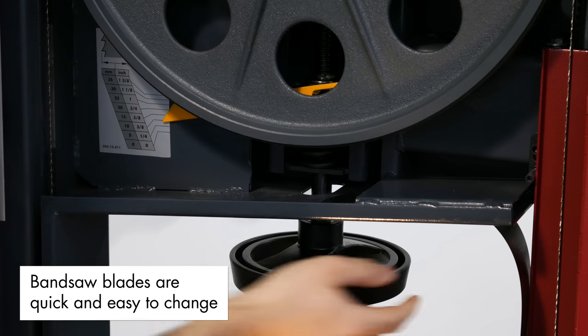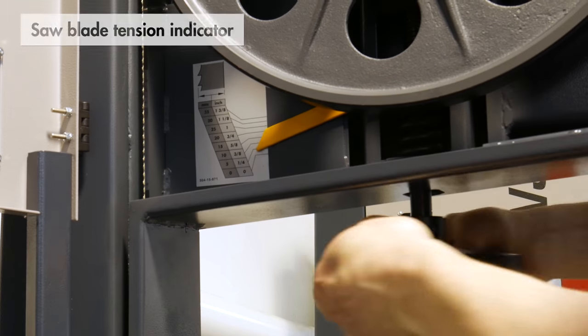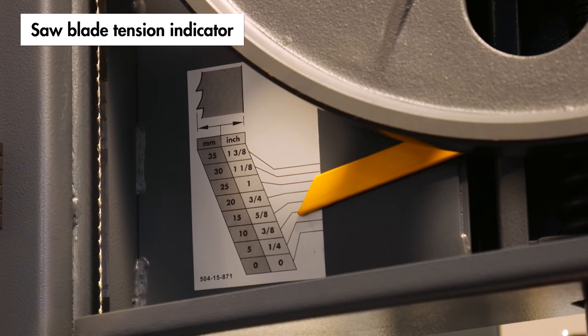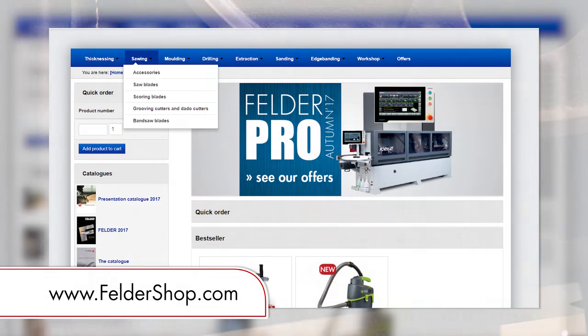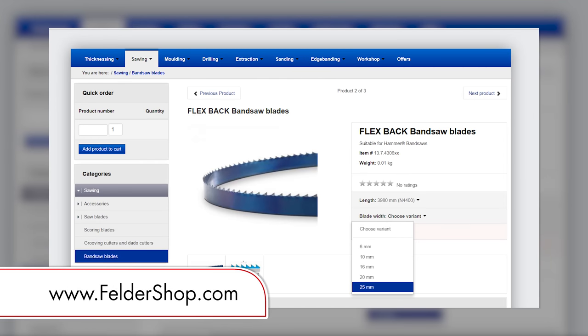Similarly, the bandsaw blade is also easily changed in just a few steps, and the blade tension indicator eliminates the need for guesswork by displaying the correct tensions for a range of different blade sizes. Sizes from 6 to 25mm are available to order from our online shop.